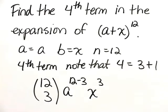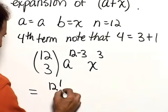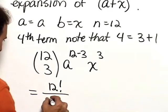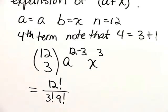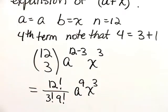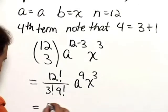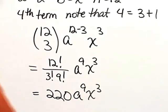And now evaluating, this would be equal to 12 factorial over 3 factorial times 9 factorial times a to the ninth x cubed. And when we evaluate 12 factorial over 3 factorial times 9 factorial, that works out to 220 a to the ninth x cubed.